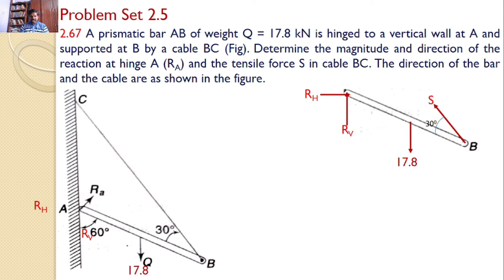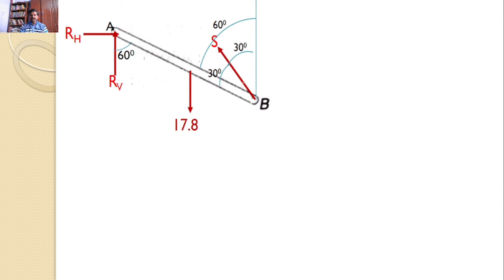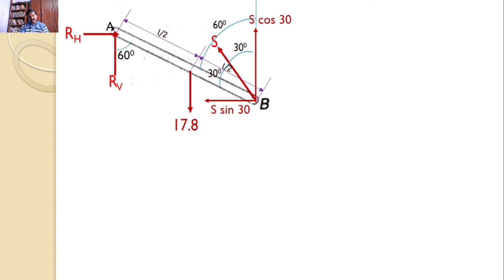Also given that AB makes an angle of 60° with the vertical, so this prismatic bar AB makes an angle of 60° with the vertical. Therefore, S makes an angle of 30° with the vertical. We will resolve S along the vertical axis and along the horizontal axis. The vertical component is S cos30 and the horizontal component is S sin30. The total length is L and the weight acts at the center, so this distance is L/2 and this distance is L/2.